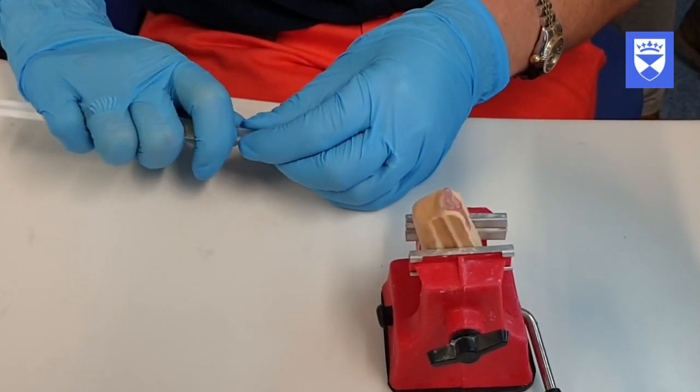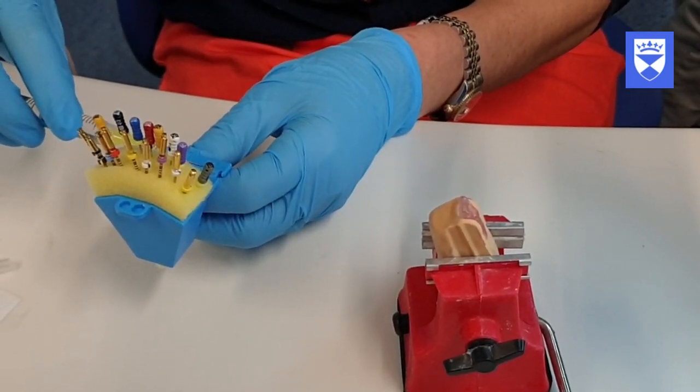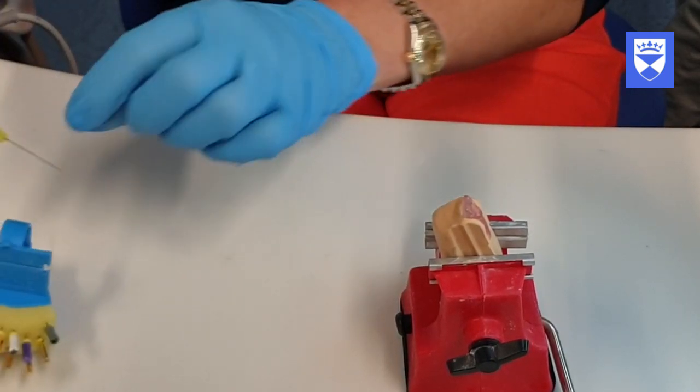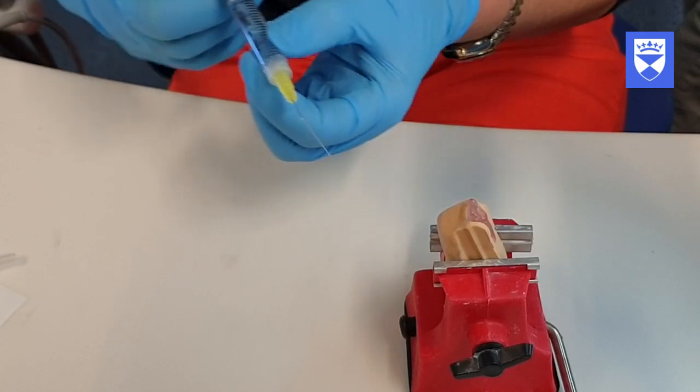Before starting, place a bend in the needle two to three millimeters short of the estimated working length of the tooth. This will help you avoid extruding sodium hypochlorite beyond the apex and into the periapical tissues.